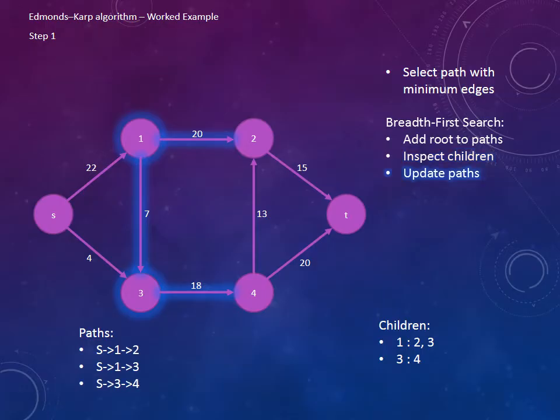So now we need to update our paths again. S to 1 can also go to 2 or it can go to 3, so we need to note that and make them two separate paths in our collection. Meanwhile, S to 3 can only go to 4.